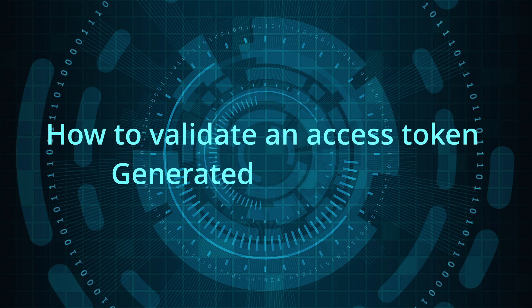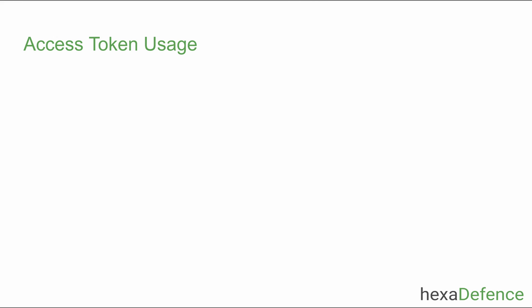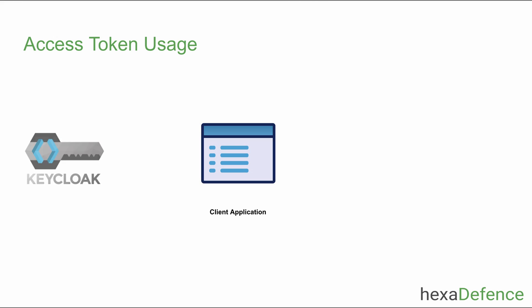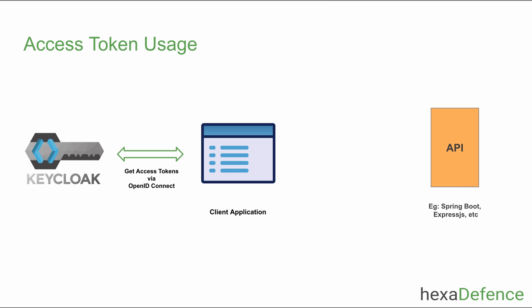How to validate an access token generated by Keycloak. Client applications retrieve access tokens from Keycloak via OpenID Connect protocol. These access tokens are used by the client application to call backend APIs. Backend APIs must validate these access tokens and authorize them before acting upon the request.